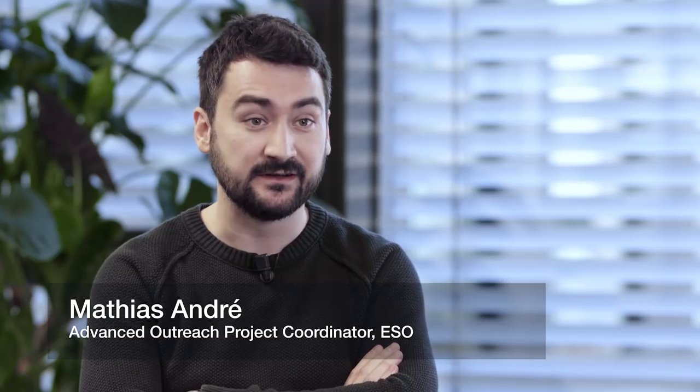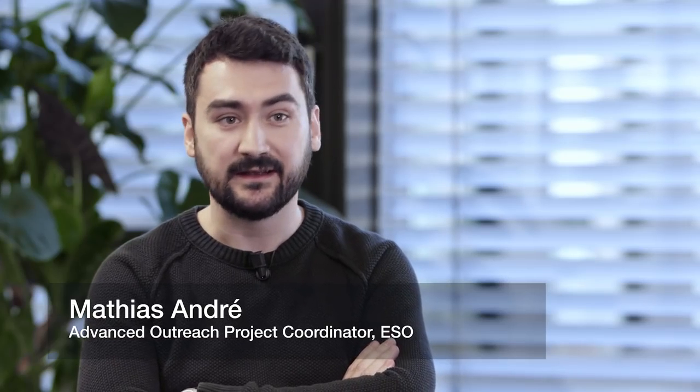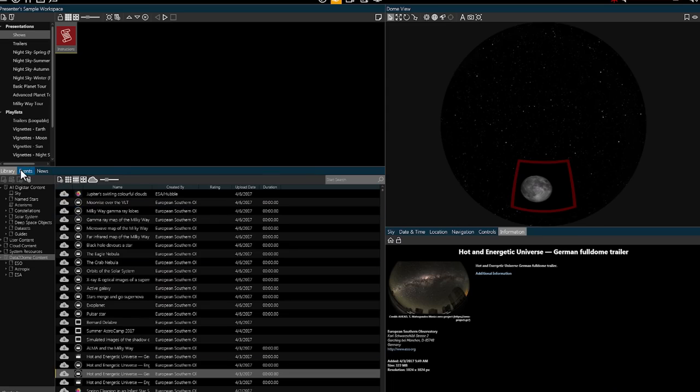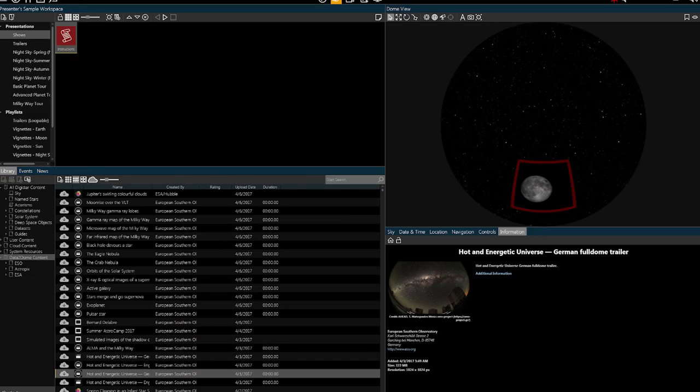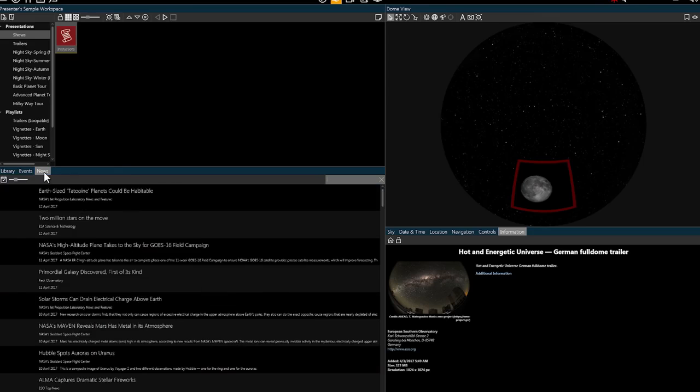The Data2Dome standard describes how observatories and agencies such as ESO, NASA or ESA can publish JSON feeds with all the images, videos and other content they have. JSON is a standard data exchange format, which is very similar to RSS, commonly used for getting up-to-date information from websites.